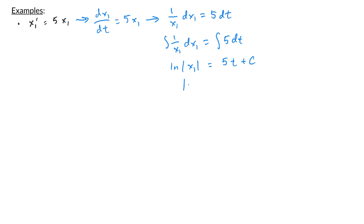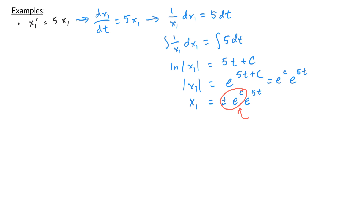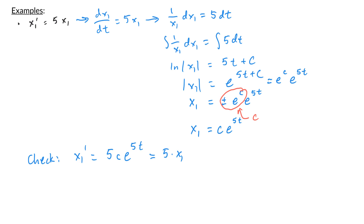Exponentiating both sides gives |x1| = e^(5t+c) = e^c · e^(5t). Removing the absolute value allows the right side to be ±e^c · e^(5t), and since ±e^c is just a constant I relabel it c. So the solution is x1 = c·e^(5t). Checking: x1' = 5c·e^(5t) = 5·x1, confirming x1 = c·e^(5t) satisfies the equation.